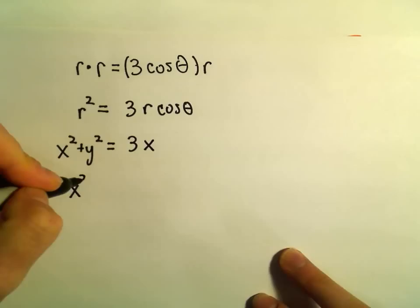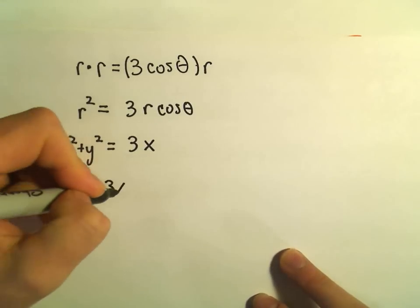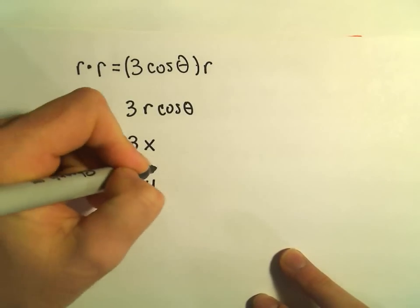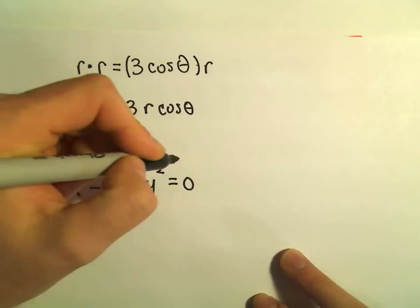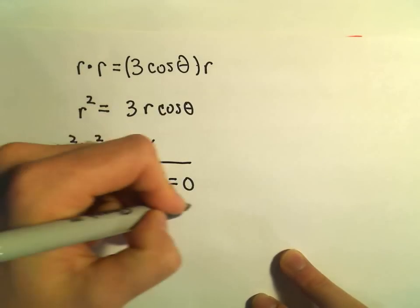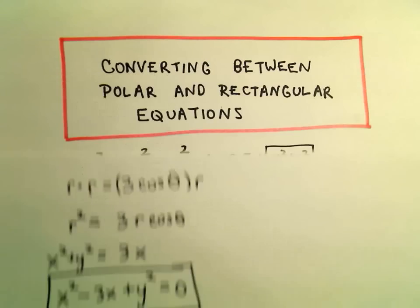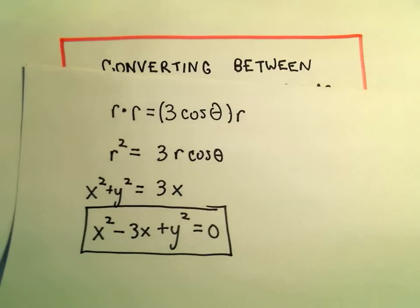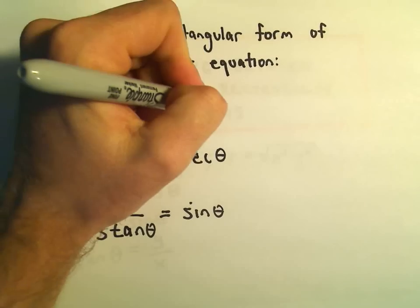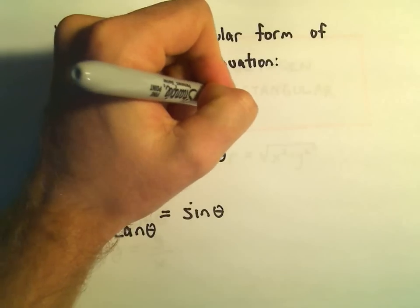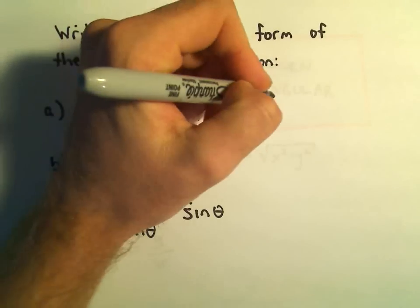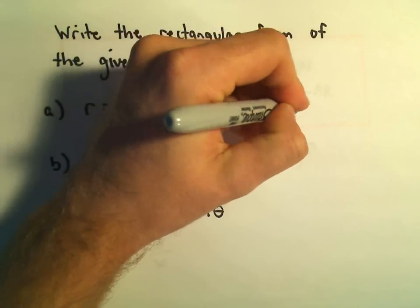So if you wanted to, we could write this as x squared minus 3x plus y squared equals 0. And now we've turned it into an equation involving rectangular coordinates or Cartesian coordinates. That's all there is to it. The solution here would just be x squared minus 3x plus y squared equals 0.